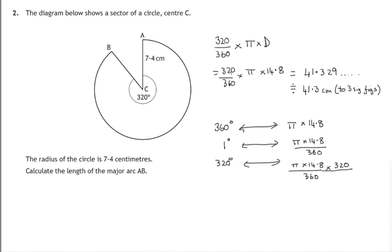And we basically here have the same calculation that we had before. Remember, before we had 320 times pi times 14.8 divided by 360. So there's a divide by 360 and pi times 14.8 times 320. It's just in a slightly different order. So that's an alternative way of doing that calculation. 41.3 centimetres to three significant figures.